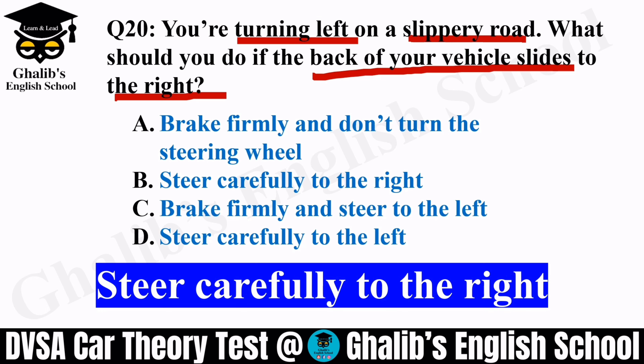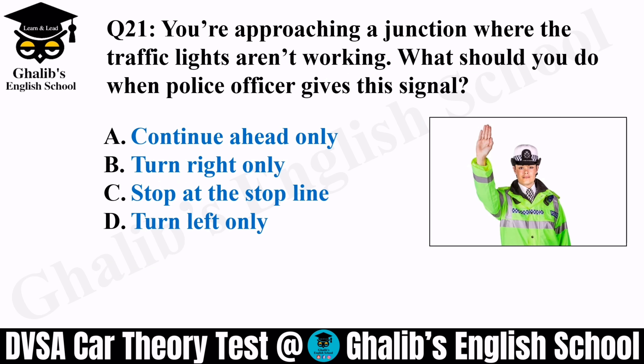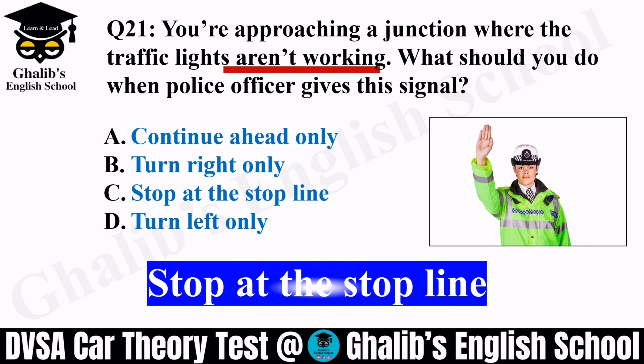Question 21. You are approaching a junction where the traffic lights aren't working. Junctions are usually controlled by traffic lights, but sometimes they are out of order. You have a police officer facing towards you. What should you do when the police officer gives you this signal? Options: continue ahead only, turn right only, stop at the stop line, or turn left only. Follow the signal — it means stop at the stop line.